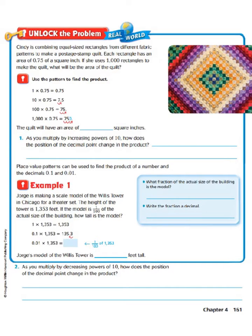So let's just dive right on in into our word problem. Cindy is combining equal-size rectangles from different fabric patterns to make a postage stamp quilt. Each rectangle has an area of 75 hundredths of a square inch. If she uses 1,000 rectangles to make the quilt, what will be the area of the quilt?